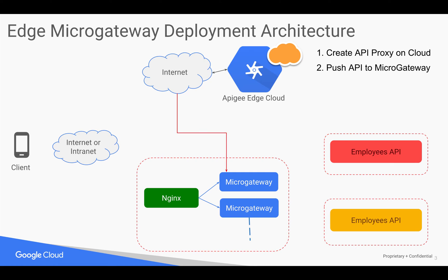You push the API proxy created in Apigee Edge cloud down to the micro gateways running on-premises, which will take the traffic, process it, and perform API management. You enforce various API management functionalities using policies — in micro gateway these are plugins, which are Node.js based. Micro gateway is actually a Node.js based implementation, which is very lightweight.